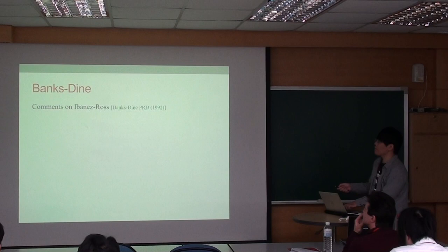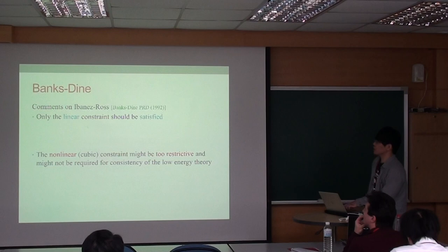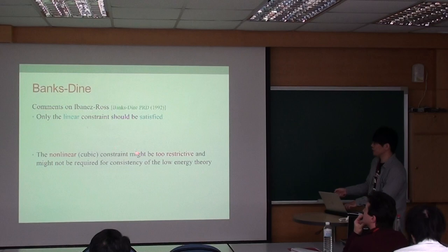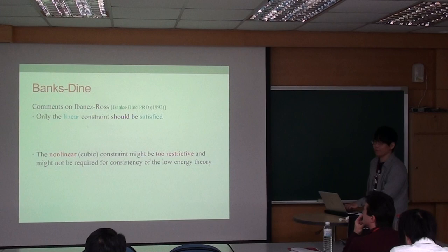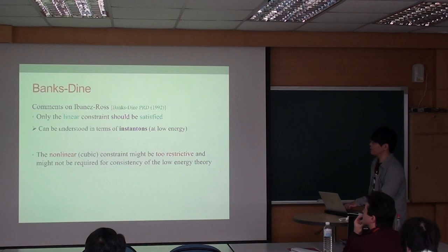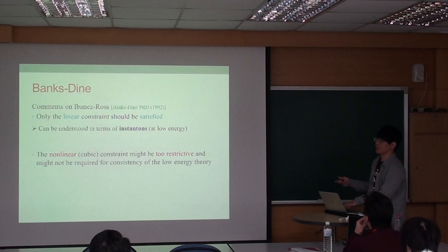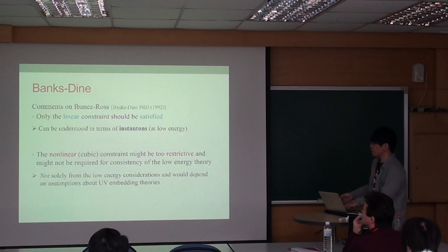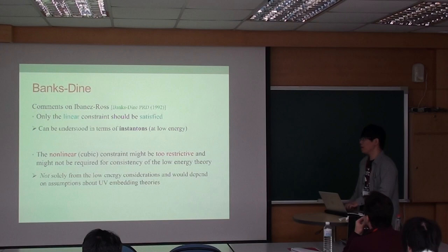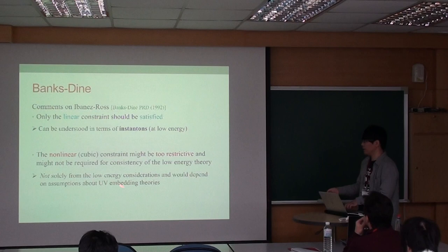However, soon after the work by Ibáñez-Ross, Banks, Dine, and Gaillard gave some comments on it. That is, only the linear constraint should be satisfied, while the non-linear or cubic constraint might be too restrictive and might not be required for consistency of the low-energy effective field theory. That is because while the linear constraint can be understood in field theory just in terms of instantons - which can be purely gravitational instantons or gauge instantons if the theory also includes some gauge symmetry - the non-linear constraint is not solid from field theory considerations and would depend on the assumption of UV parent theories. For example, normalization of the U(1) charges would in general affect this cubic constraint.